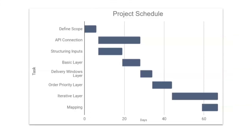Here is our project schedule and how we went about this project. We started by defining what we were trying to solve, then spent a significant amount of time on the API connection and getting data into Python. From there we built our basic layers, added order priority, developed our iterative layer, and finally mapped our results.